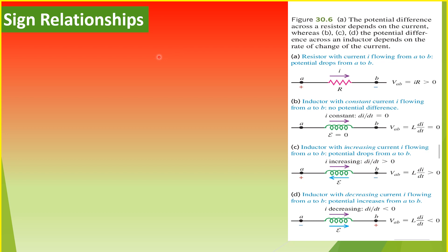The potential difference across a resistor depends on the current, whereas the potential difference across an inductor depends on the rate of change of the current and not on the current per se. As shown in caption A, the resistor with current flowing from point A to point B, we have the potential drop from point A to point B. This means that the potential difference V sub AB is greater than zero, or the potential difference is positive.